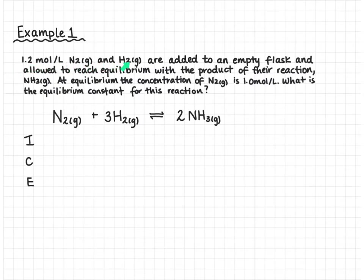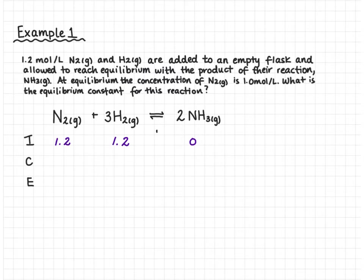The problem says we start with 1.2 moles per liter of N2 and H2 in an empty flask, meaning nothing else is present. So we can fill in our initial concentrations. We have zero ammonia because we had an empty flask. We put a dotted line through the arrow so we know each side of the reaction for the change row. The next piece of information is that the equilibrium concentration of N2 is 1.0 mole per liter, so we fill that in.